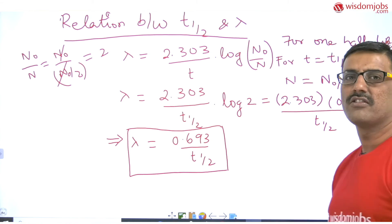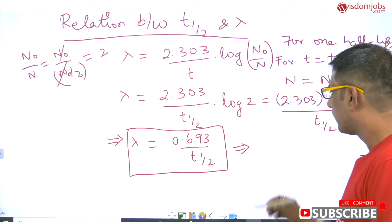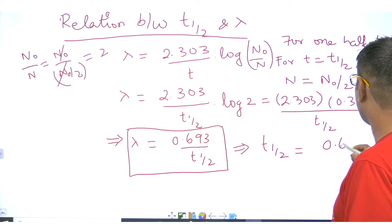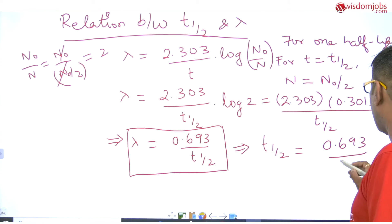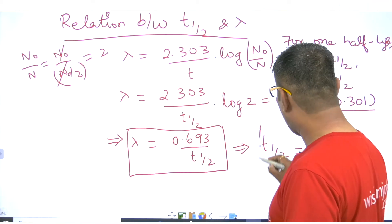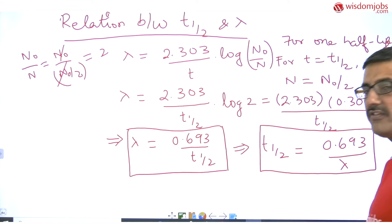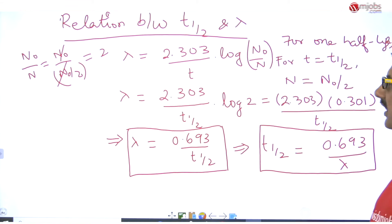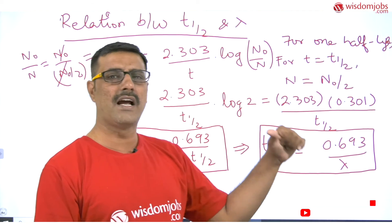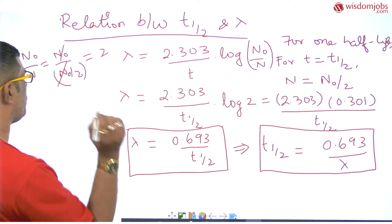This is the basic relation between the half-life period and the decay constant or disintegration constant of a radioactive element. We can also write this as: t-half equals 0.693 upon lambda. So if you know t-half you can get lambda using the first equation, and if you know lambda you can calculate t-half using the second equation.